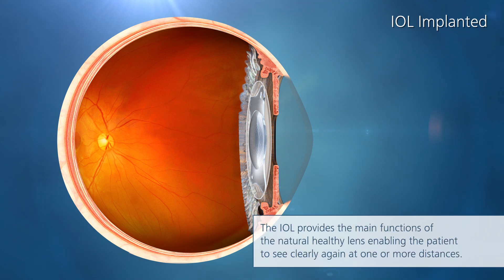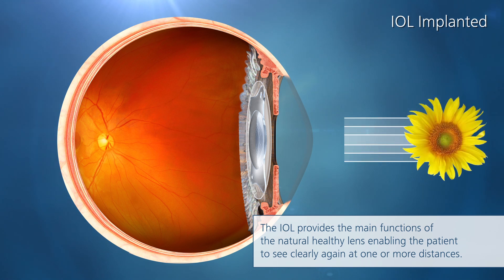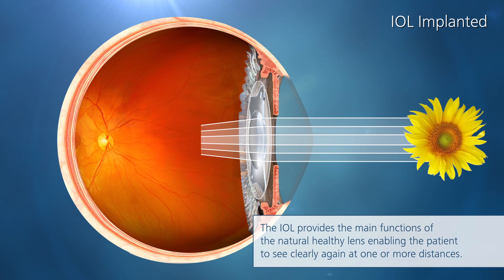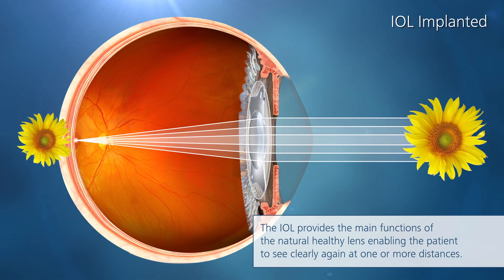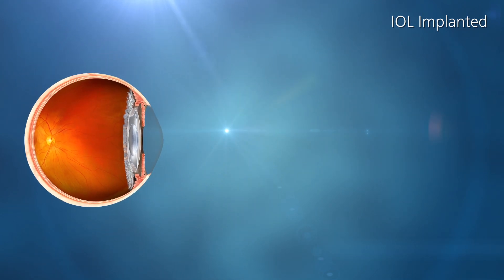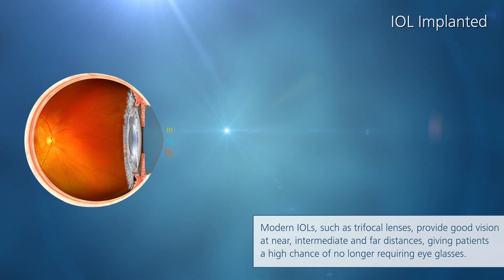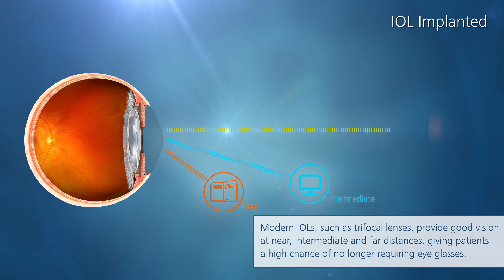The IOL provides the main functions of the natural healthy lens, enabling the patient to see clearly again at one or more distances. Modern IOLs, such as trifocal lenses, provide good vision at near, intermediate and far distances, giving patients a high chance of no longer requiring eyeglasses.